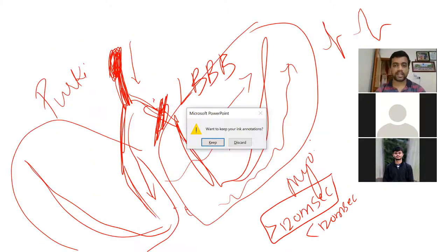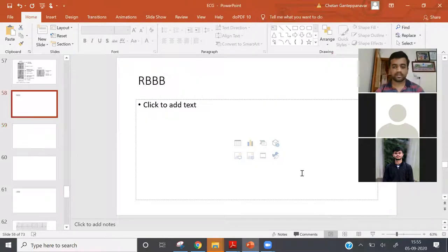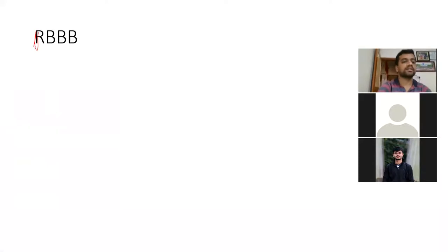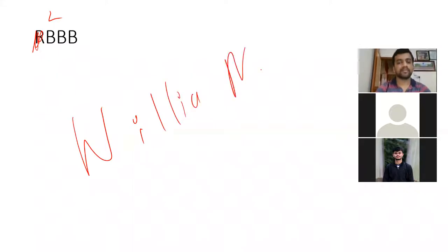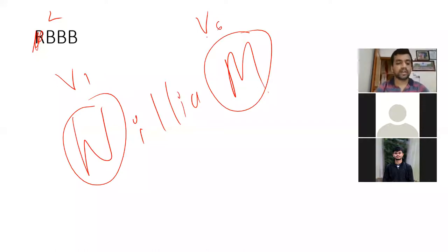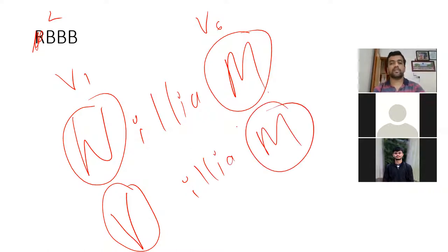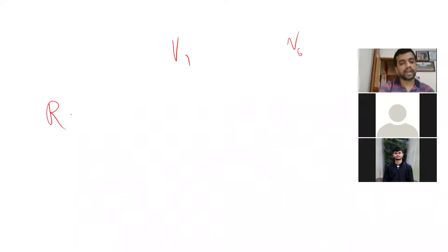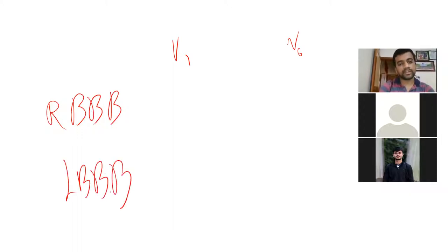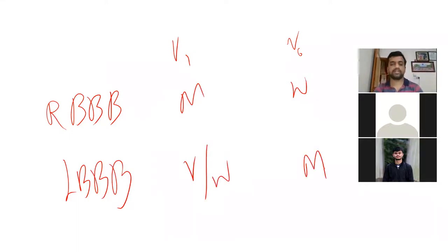For left bundle branch block, the pattern is called WILLIAM. In LBBB, the QRS complex looks like a W in V1 and an M in V6. Alternatively, V1 may show a V shape. So WILLIAM: W or V in V1, M in V6. This is how LBBB and RBBB morphologies differ — MARROW for RBBB, WILLIAM for LBBB.